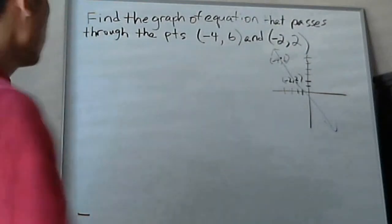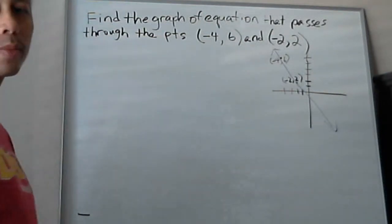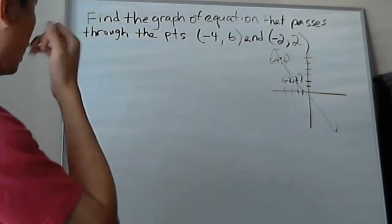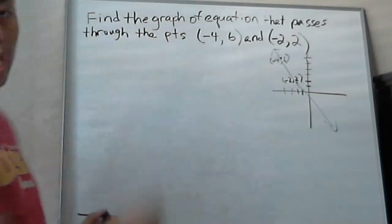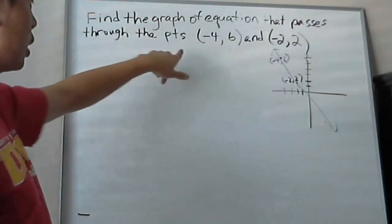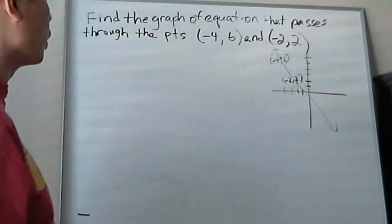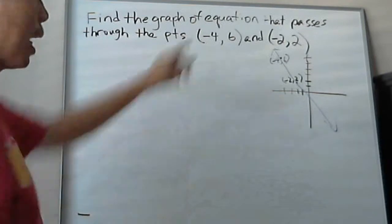So we're going to go through one of the most general questions that they always ask when it comes to two-dimensional graphs, which is to find the graph of an equation that passes through the points. We're referring to lines here.